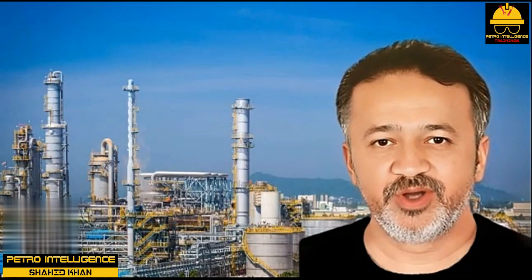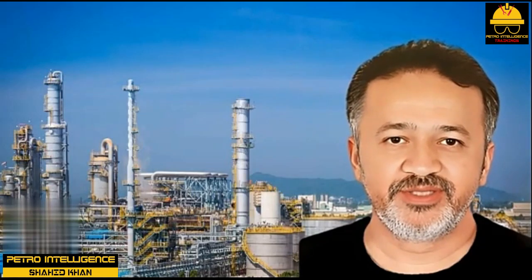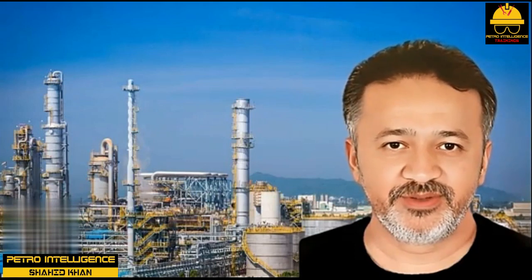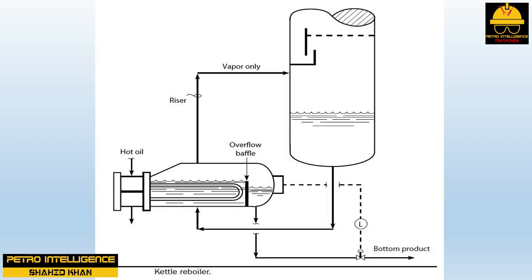Reboilers are sometimes inserted into the bottom of a tower — these are called stab-in reboilers. It is not ideal because it makes it more difficult to fix a leaking or fouled reboiler without opening the tower. The kettle reboiler has essentially the same process performance characteristics as the stab-in reboiler but is entirely external to the tower. In a kettle reboiler, the bottoms product level control valve does not control the level in the tower; it controls the level on the product side of the reboiler only. The liquid level on the boiling side is controlled by the internal overflow baffle.